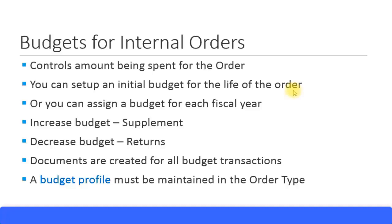You can consume that budget over the life of the order, or you can separate it by fiscal years. For example, you can assign $1,000 for the life of the order but restrict it by fiscal year — $300 for fiscal year 2016, $400 for fiscal year 2017, and $300 for 2018. The $1,000 is the overall budget, but you're also restricting how much you can spend each fiscal year.